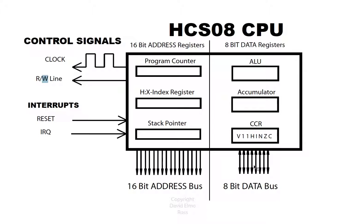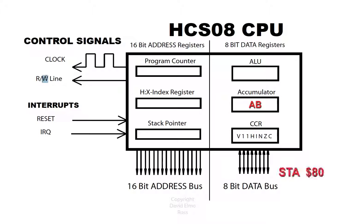Loads and stores are what change the read-write line. If you load something, it's going to come in — typically you load the accumulator, meaning information is coming in on the data bus as you're doing a read. If you want to store the accumulator out to memory, like address 80, then the read-write line will drop low and the information in the accumulator will go out to that address.